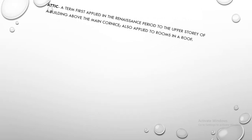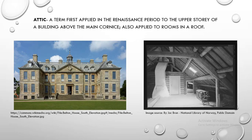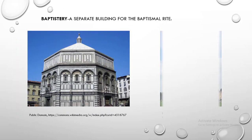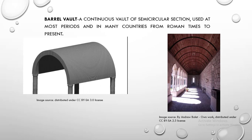Attic. Attic is a term first applied in the Renaissance period to the upper story of a building above the main cornice, also applied to rooms in a roof. Baptistry. Baptistry is a separate building for the baptismal rite. Barrel vault. Barrel vault is a continuous vault of semicircular section, used at most periods and in many countries from Roman times to present.